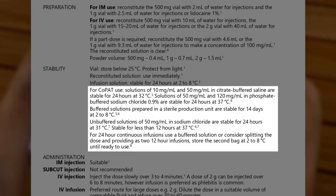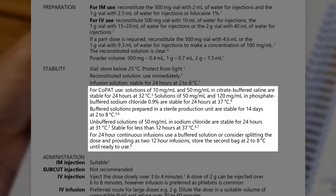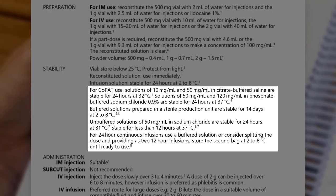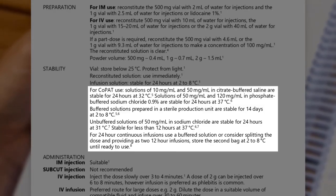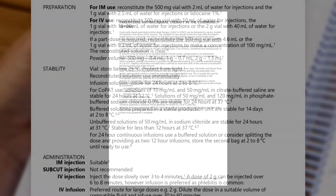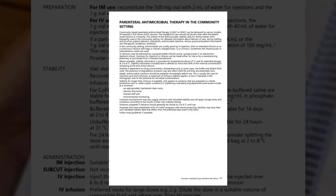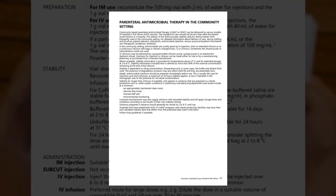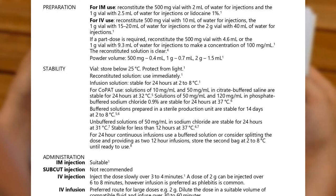The stability information for COPAT use is new in this 8th edition of the AIDH. COPAT means Community Based Parenteral Antimicrobial Therapy. This is information about the stability of selected antimicrobials at temperatures of 25 degrees Celsius and above, intended for hospital in the home programs. Before taking any action about a medicine for COPAT use, make sure you have read the COPAT section in the introduction to understand the limitations – this information is not necessarily transferable to the inpatient setting.